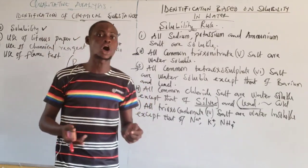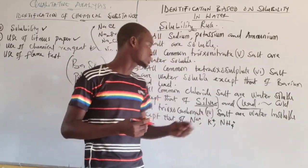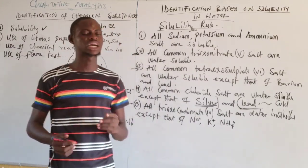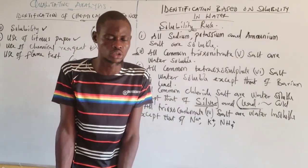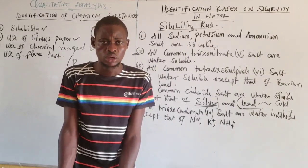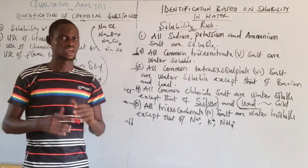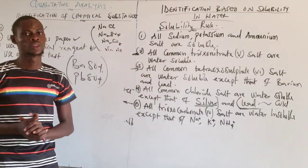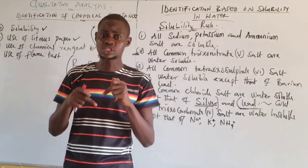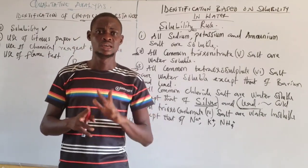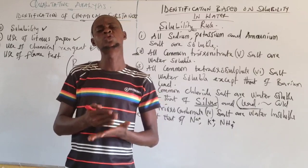The next rule: all trials of carbonate salts — that is trioxocarbonate(IV) salts — are water-insoluble except those of potassium, sodium, and ammonium. Salts of sodium, potassium, and ammonium are always soluble, but all other carbonate salts are insoluble. Please take note of that.